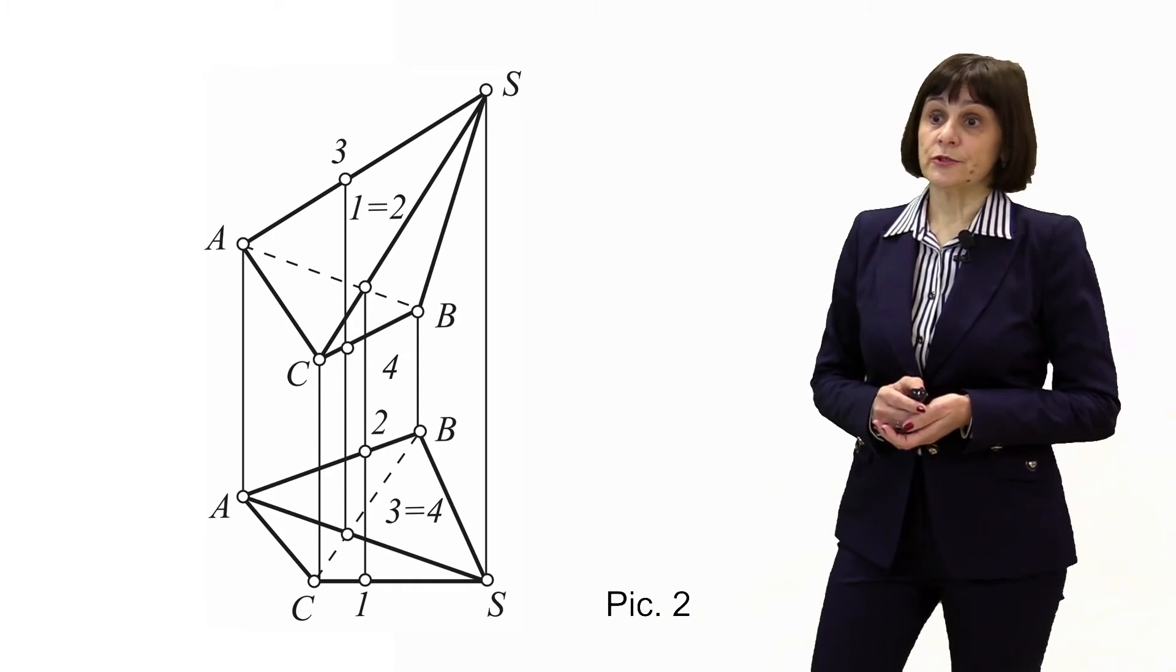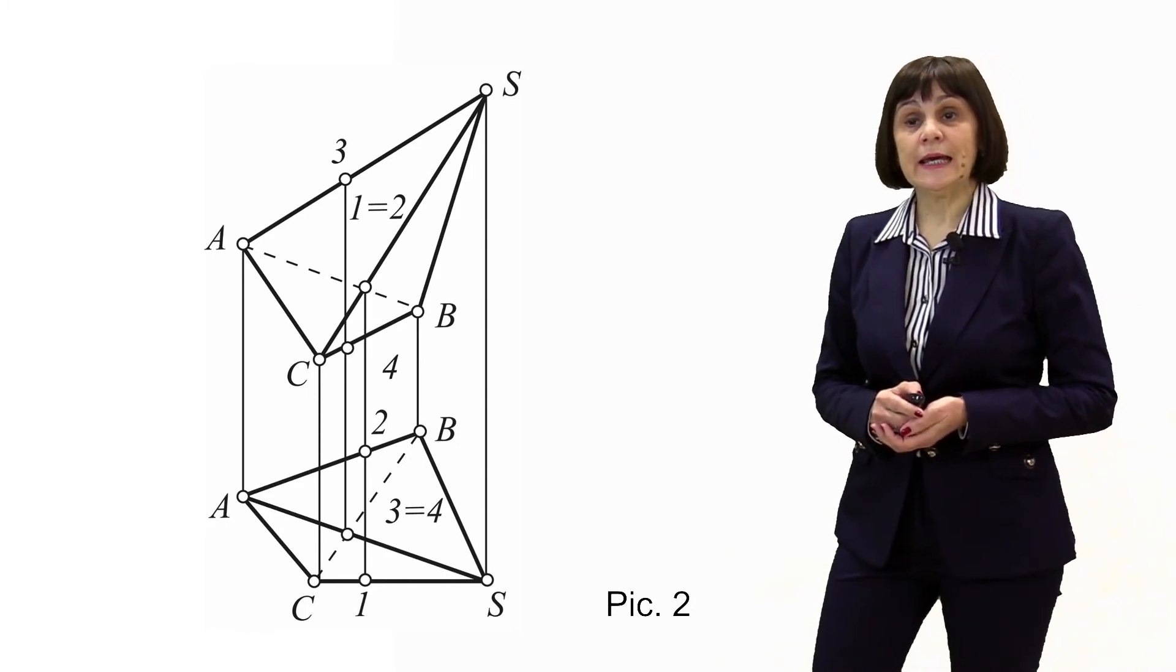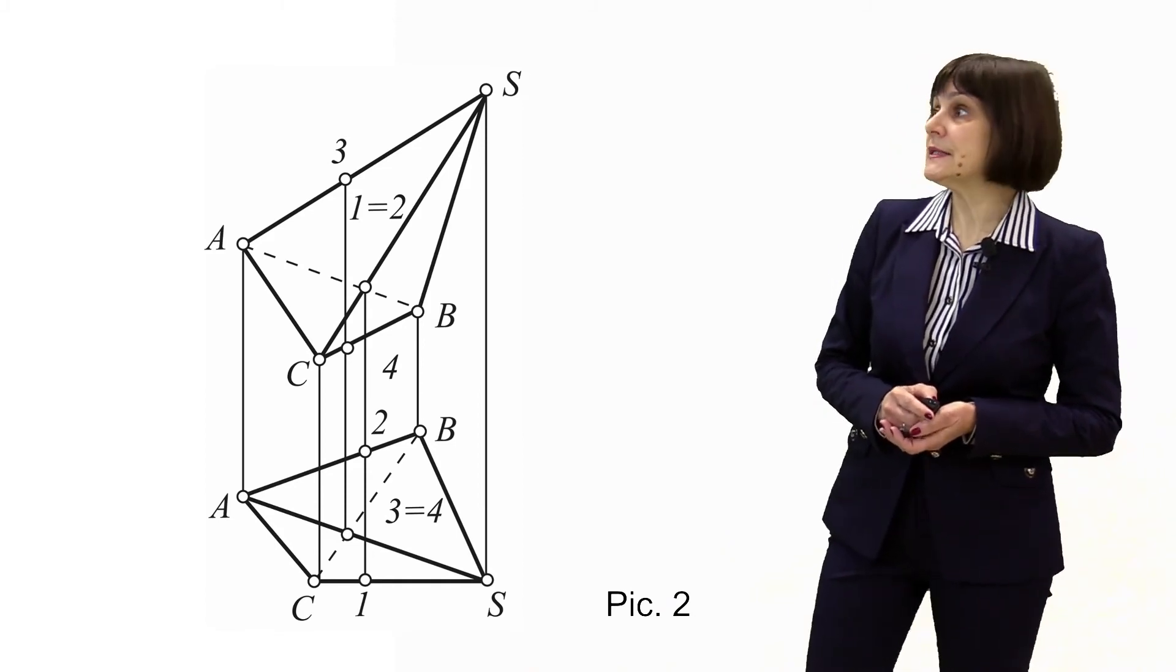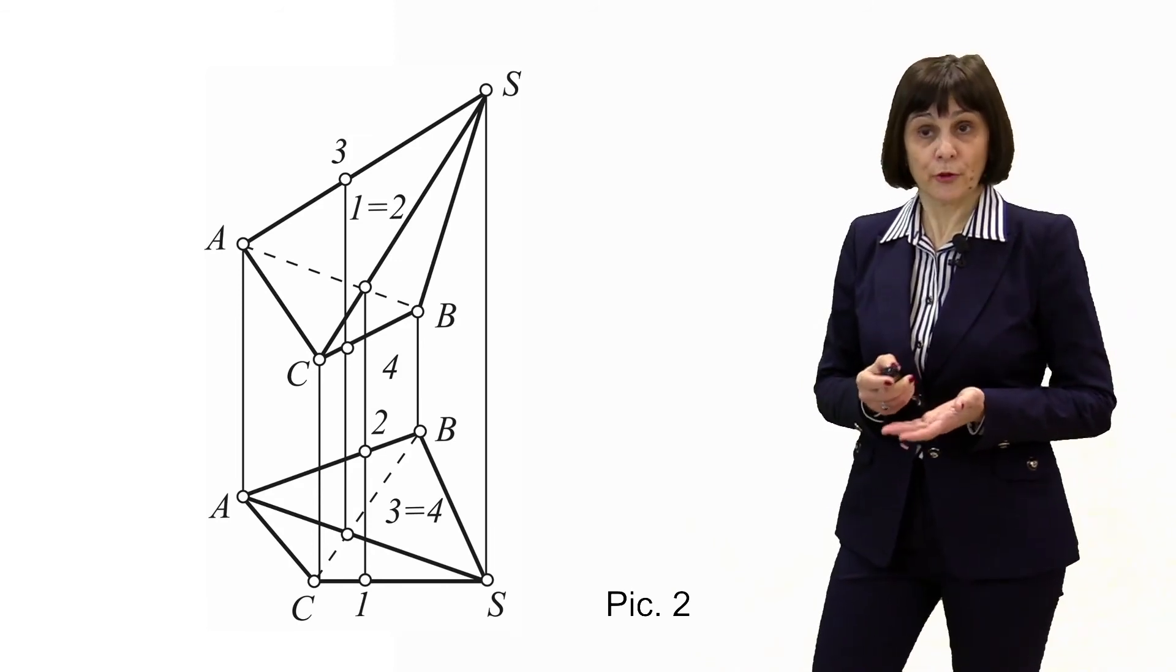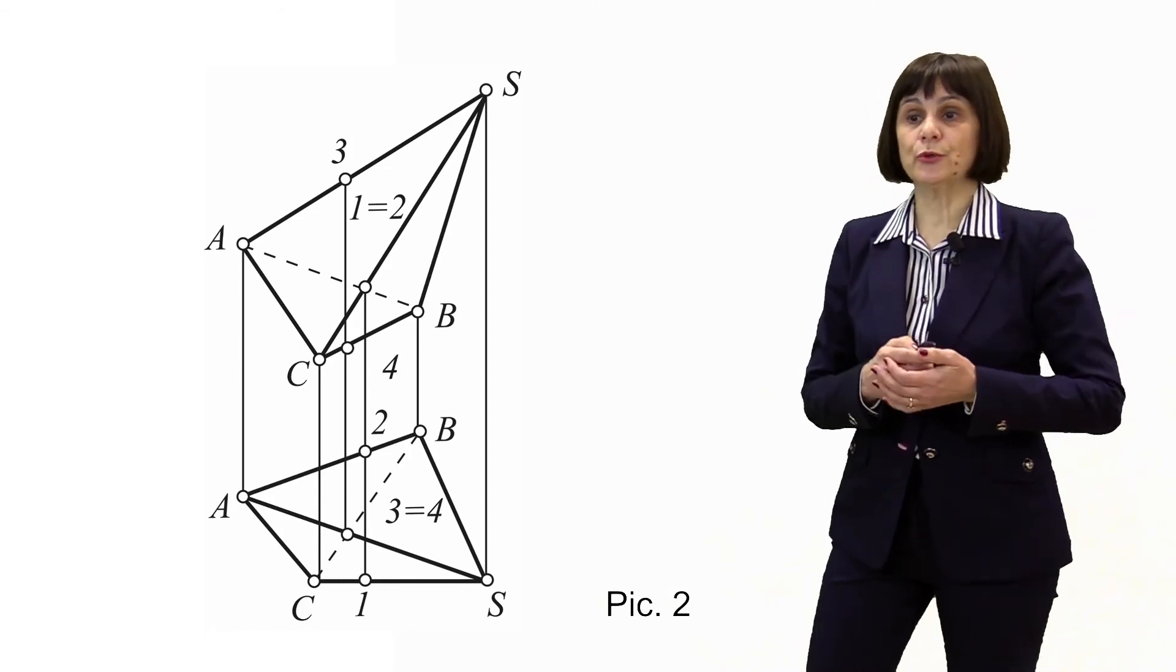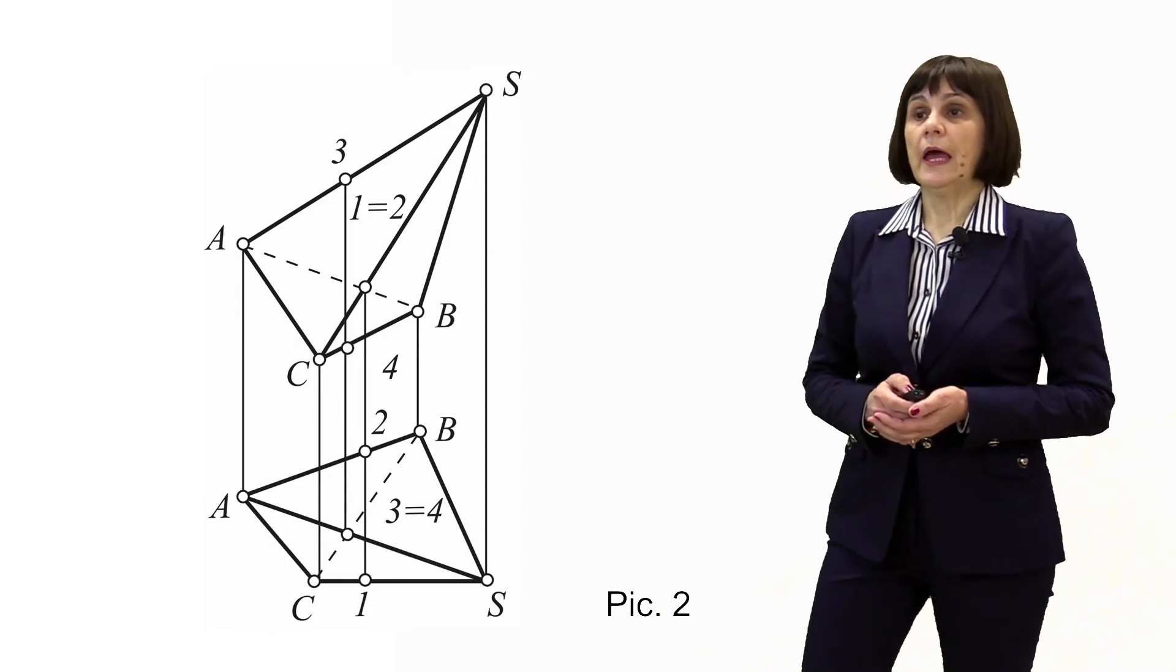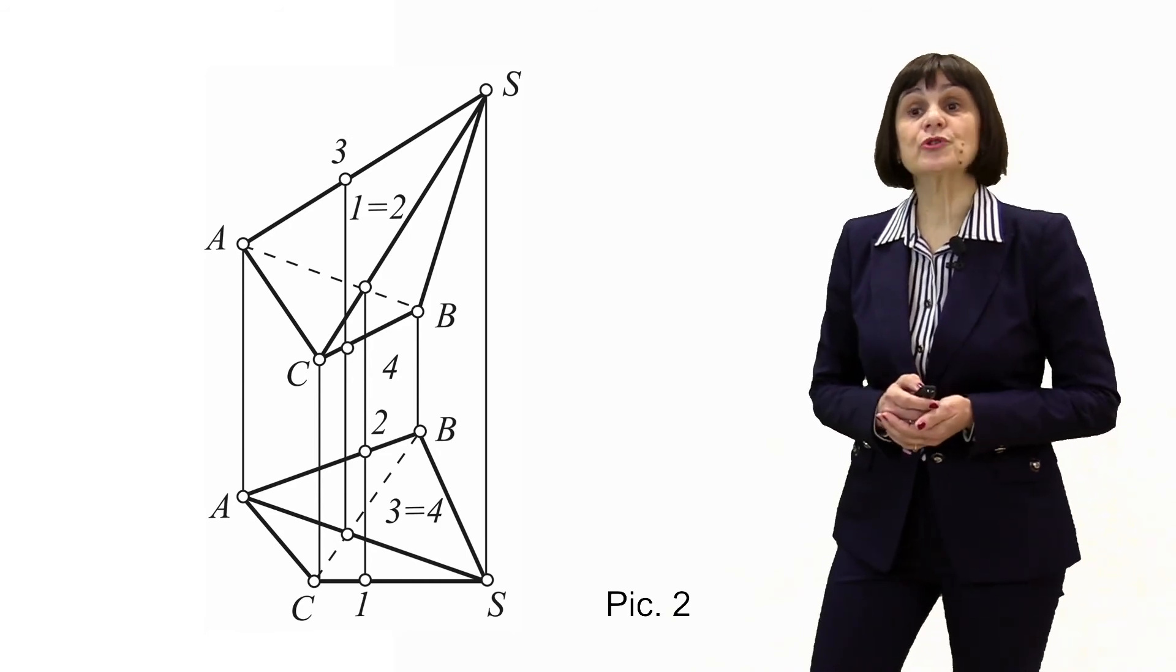Second, to determine the visibility of the edges AB and CS in the front view, we take two frontally competing points belonging to the edges. It is points 1 and 2. We can say that point 1 is closer to the observer than point 2. It means that in the front view it is visible, and the edge of the pyramid CS is also visible for us.